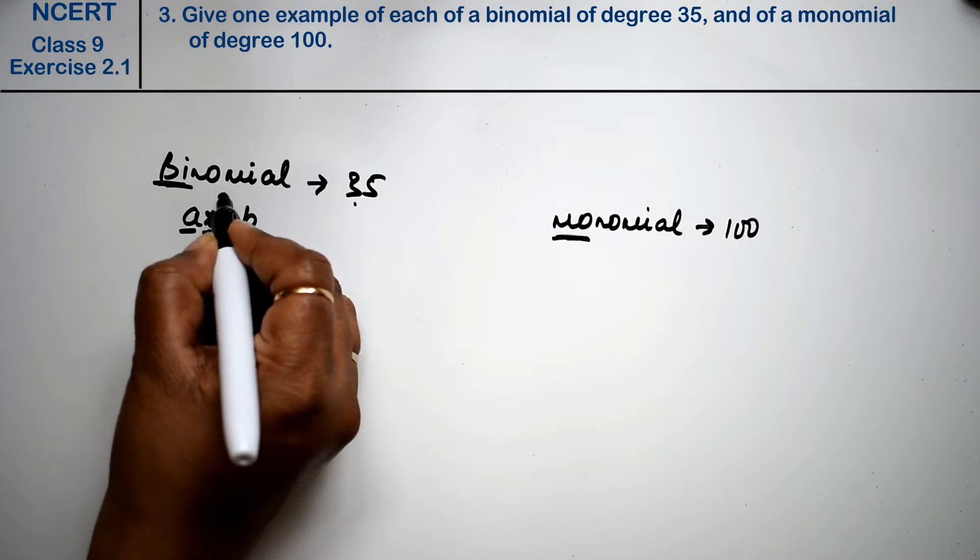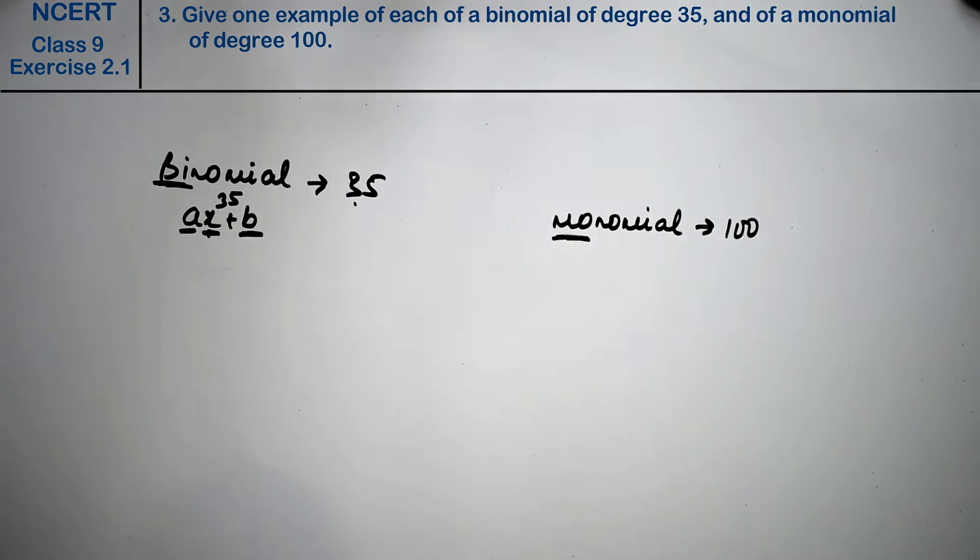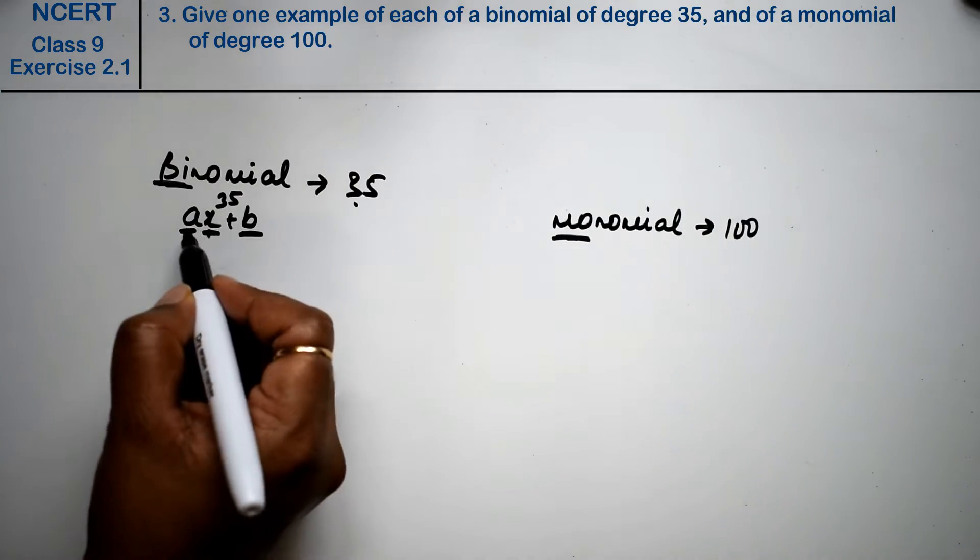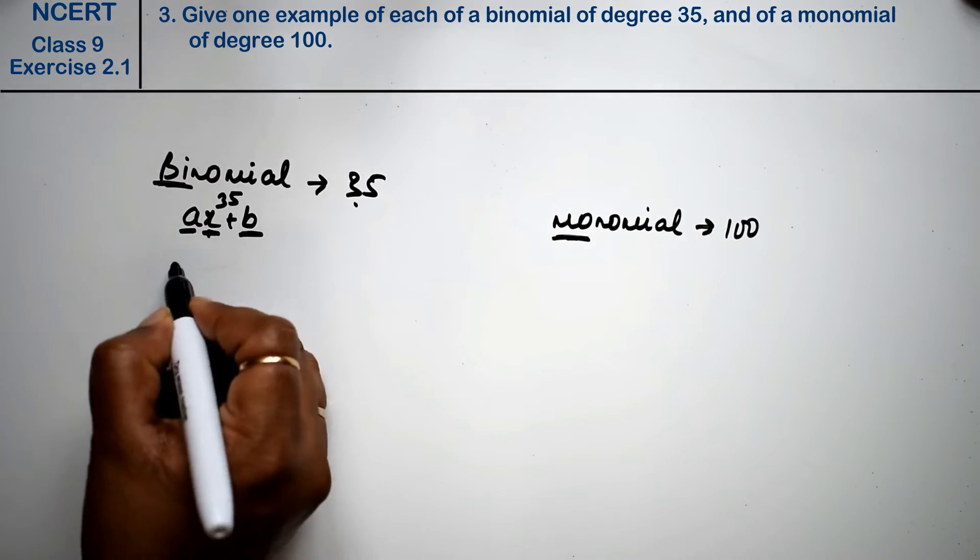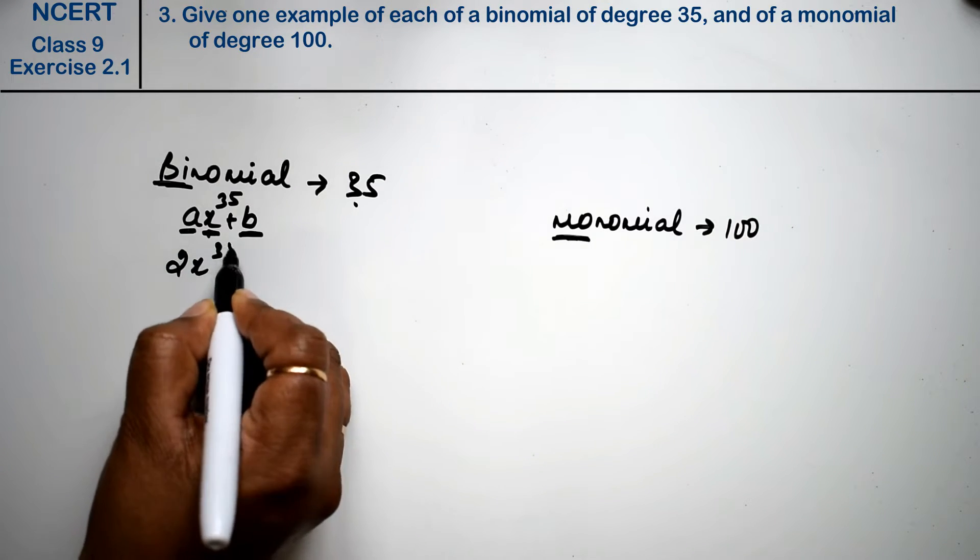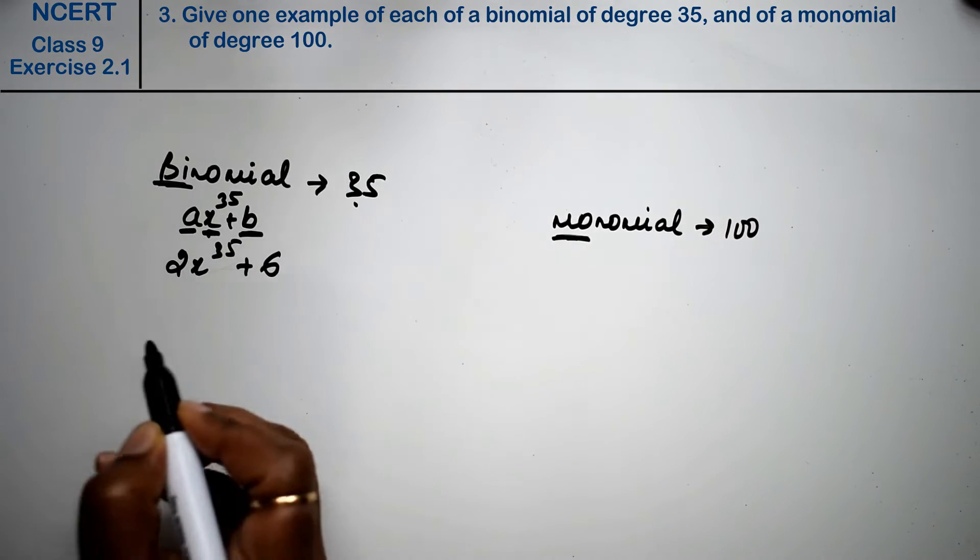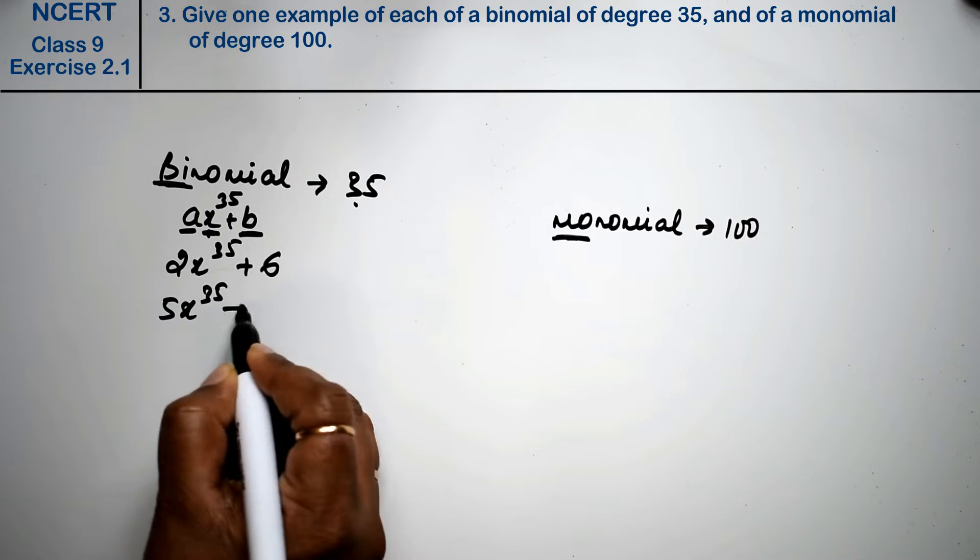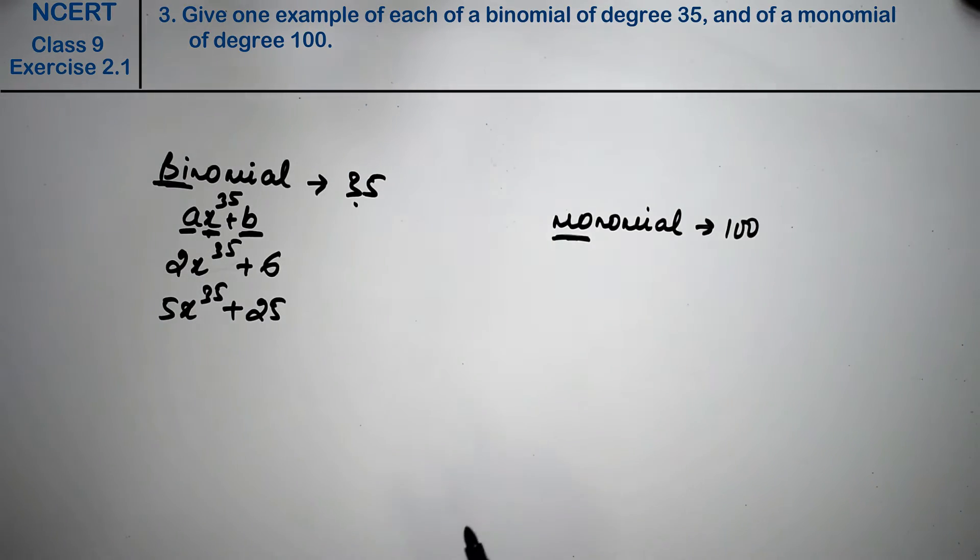For a variable of degree 35, we have to write x to the power 35. You can write a and b as anything, like 2x^35 plus 6, or 5x^35 plus 25.